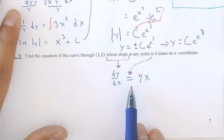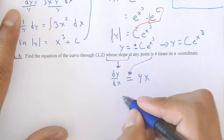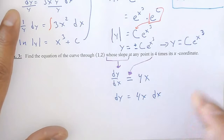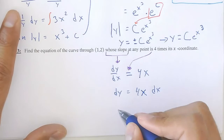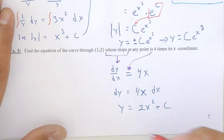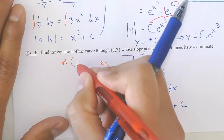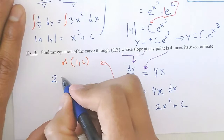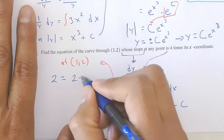Integrate: that gives the general solution. I am given a point — at the point (1, 2) I can find the constant. 2 = 2(1)² + c, so 2 = 2 + c, giving me the constant equal to 0. That means my equation is y = 2x² + 0, so y = 2x².